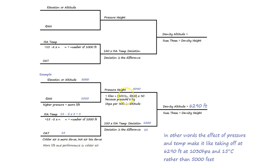What would the pressure difference be of say QNH 1,010? It would be 1,013 minus 1,010 which is 3, and 3 times 30 is 90. So the effect would be like taking off from 90 feet higher. You can see the bigger the variation from standard, the more the effect is going to be. And when it goes up - so when it's QNH 1,023, that'd be 1,013 minus 1,023 which is minus 10. Minus 10 times 30 equals minus 300. So we would have more air density available, more lift - it'd be like taking off at 300 feet below the level that we're taking off.